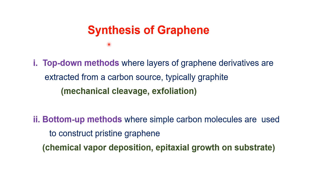Two approaches are used for the synthesis of graphene: top-down methods and bottom-up methods. In the top-down method, graphite is used as the carbon source starting material, and layers of graphite are extracted and converted to graphene through methods such as mechanical cleavage and exfoliation. In the bottom-up method, simple carbon molecules are used to construct pristine graphene — carbon at the atomic level agglomerates to produce nano-sized graphene, through chemical vapor deposition or epitaxial growth on a substrate.